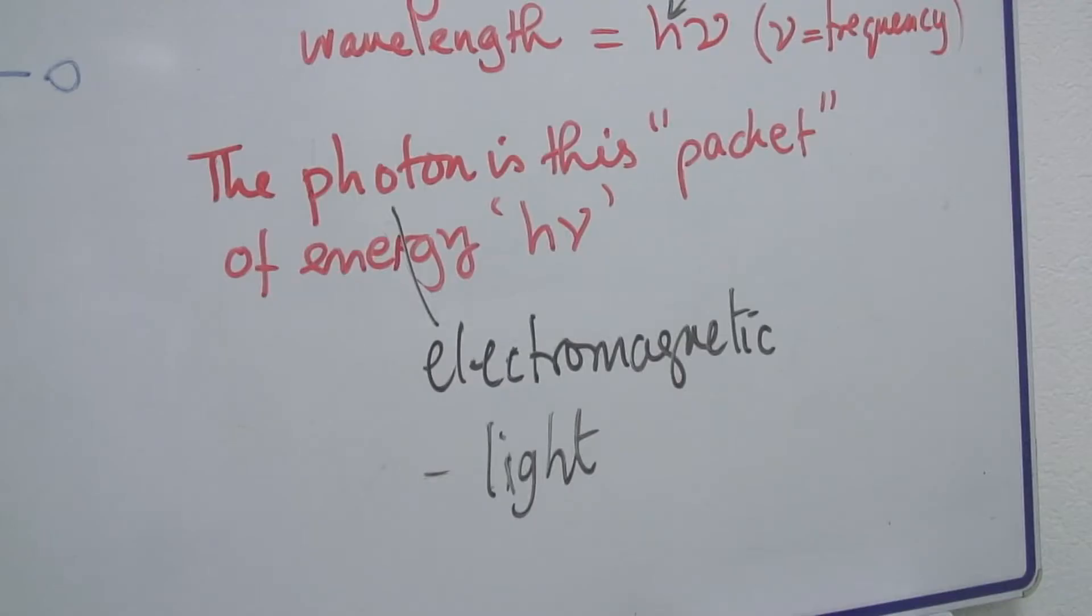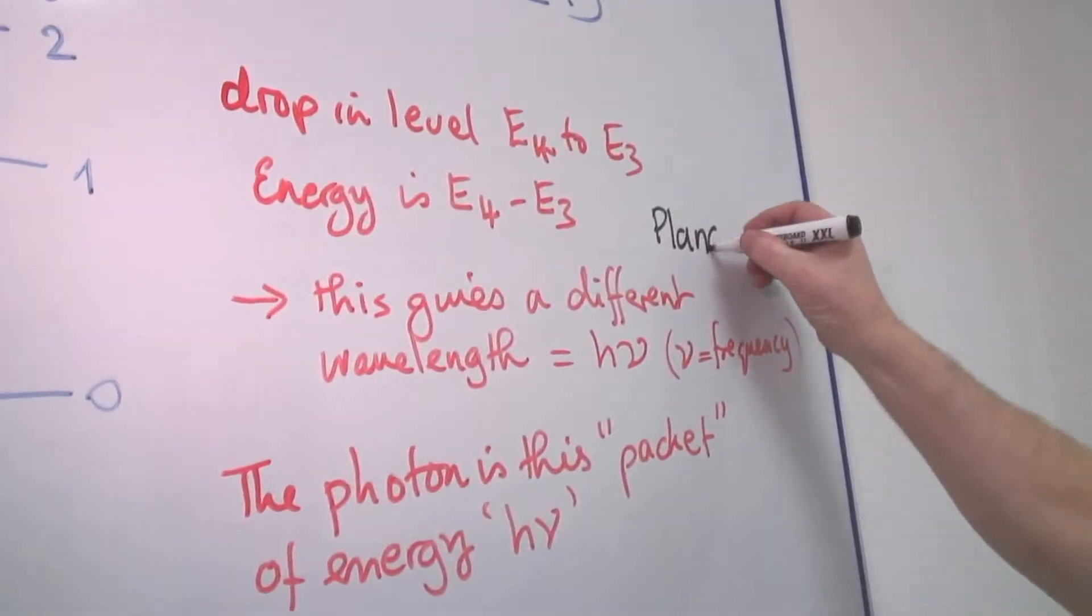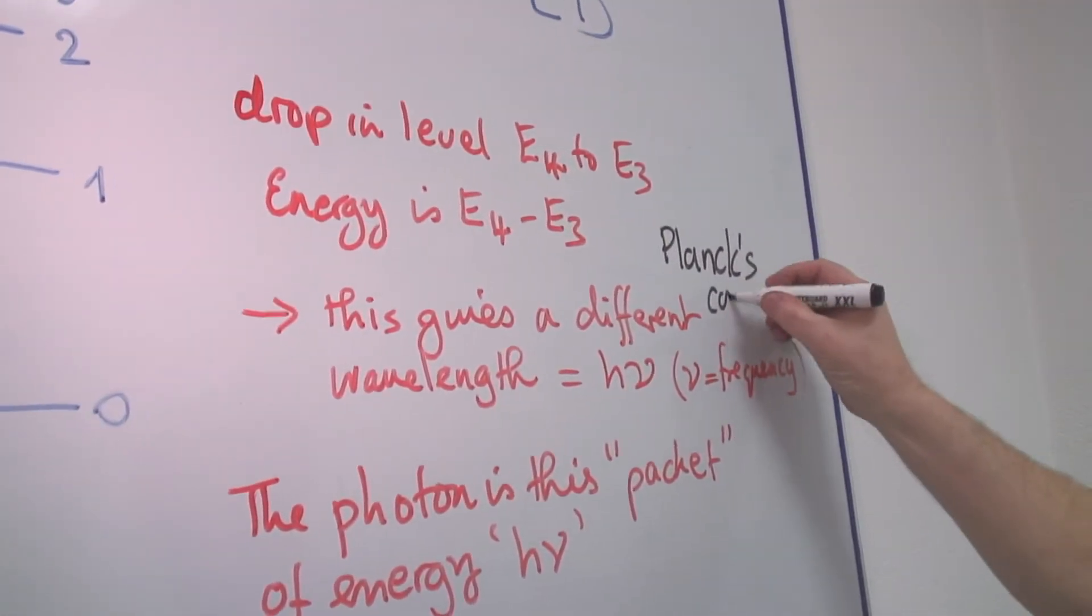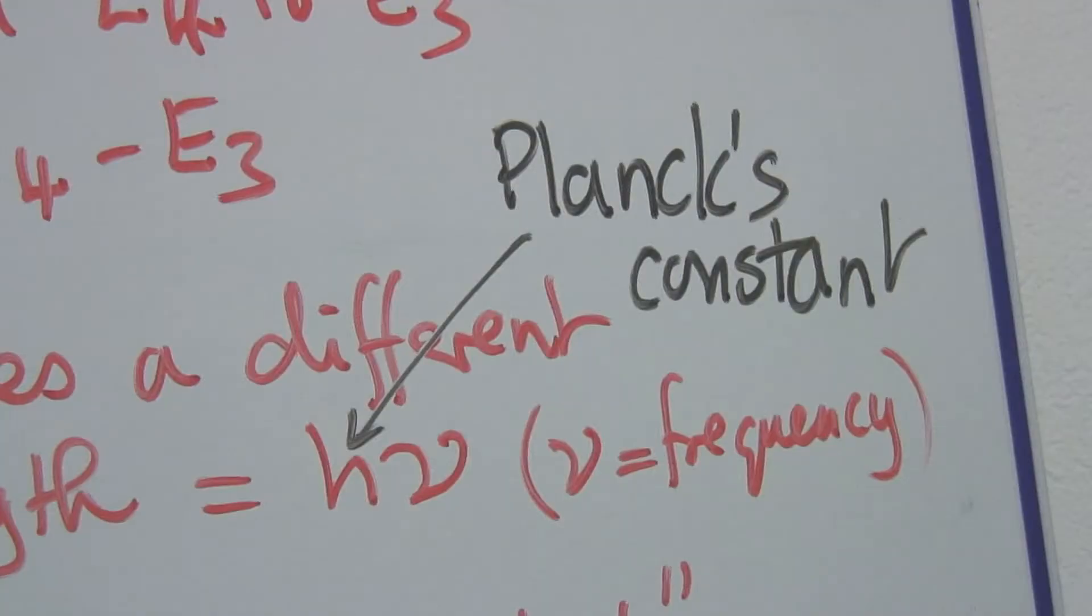H is a constant called Planck's constant, after a gentleman called Planck. So that's Planck's constant, H nu, and nu is the frequency.